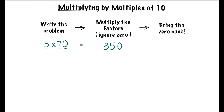Let's write the problem: 40 times 9. We know 40 is a multiple of 10. Let's multiply the factors 4 and 9, which equals 36. Let's bring the 0 back. So we know that 40 times 9 equals 360.